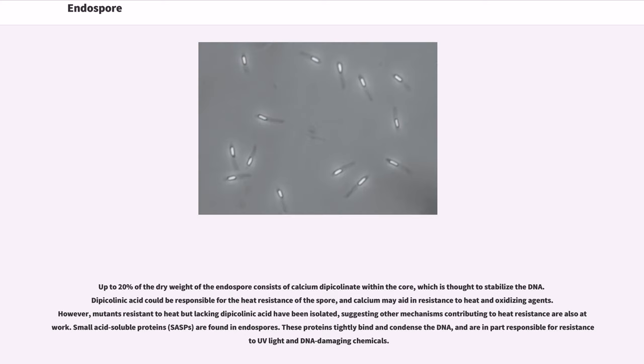Up to 20% of the dry weight of the endospore consists of calcium dipicolinate within the core, which is thought to stabilize the DNA. Dipicolinic acid could be responsible for the heat resistance of the spore, and calcium may aid in resistance to heat and oxidizing agents. However, mutants resistant to heat but lacking dipicolinic acid have been isolated, suggesting other mechanisms contributing to heat resistance are also at work.